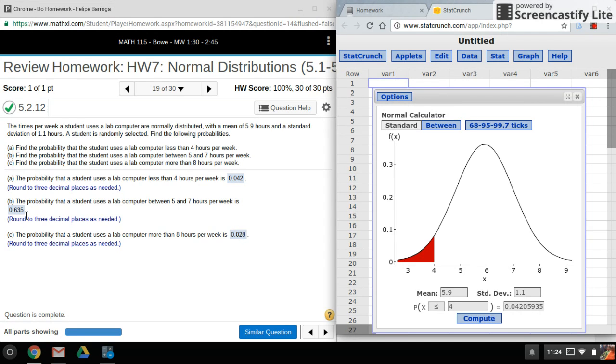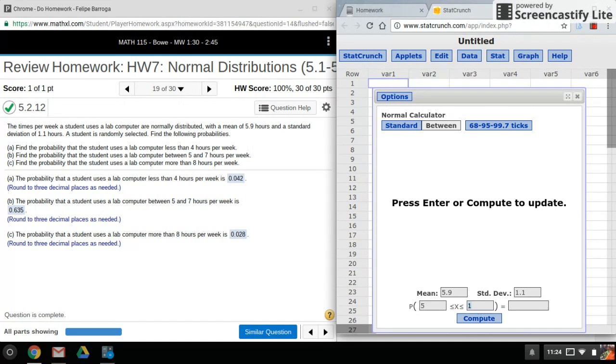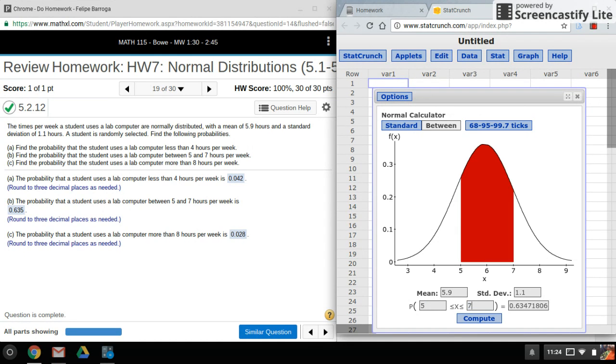Now for the next point, this is between five and seven hours, so I want to hit between and I'll enter in five and seven here. And again, there is my area or probability. And the last part here says more than.